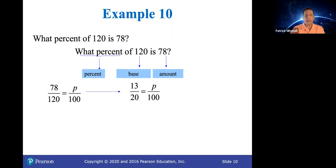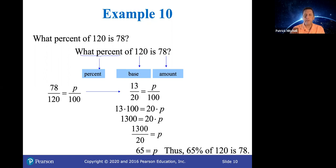And they simplified 78 over 120. Again, you really don't have to do that. And then when we cross multiply, 13 times 100 equals 20 times P. 13 times 100 is 1,300 equals 20P. If we divide both sides by 20, we get that P is 65. So 65% of 120 is 78. And that's the end of section 6.4.